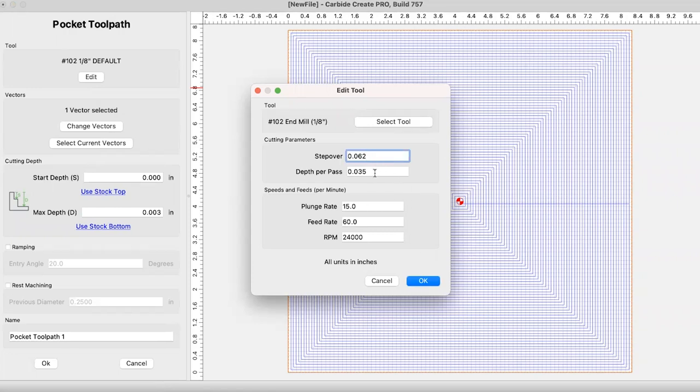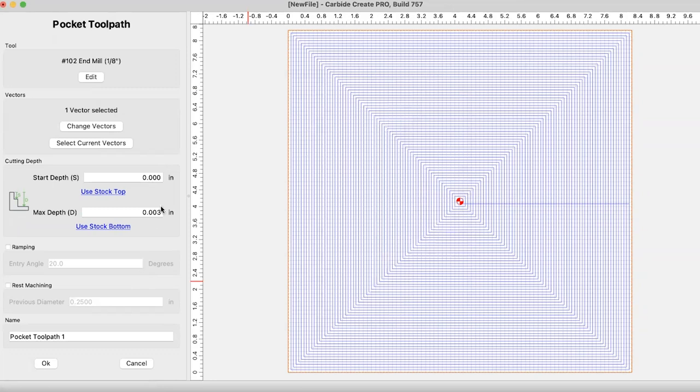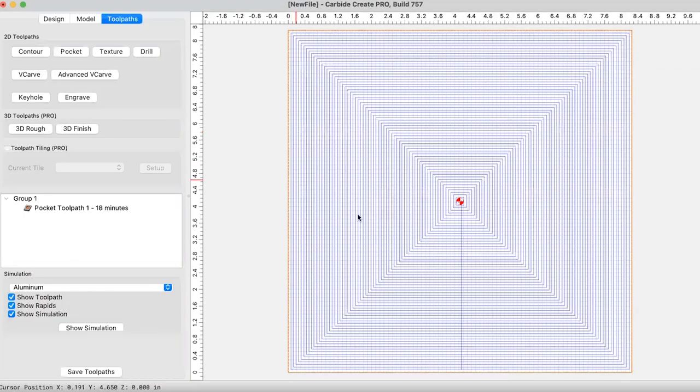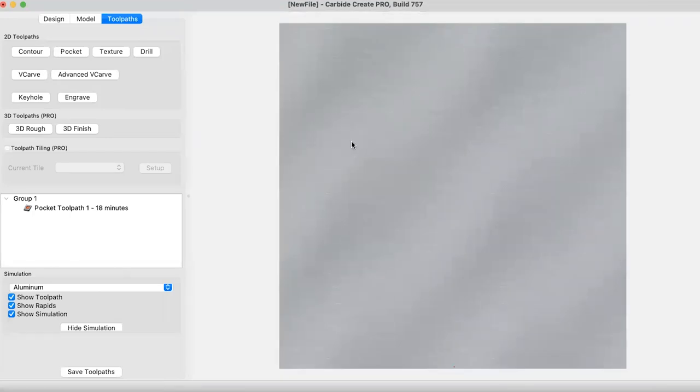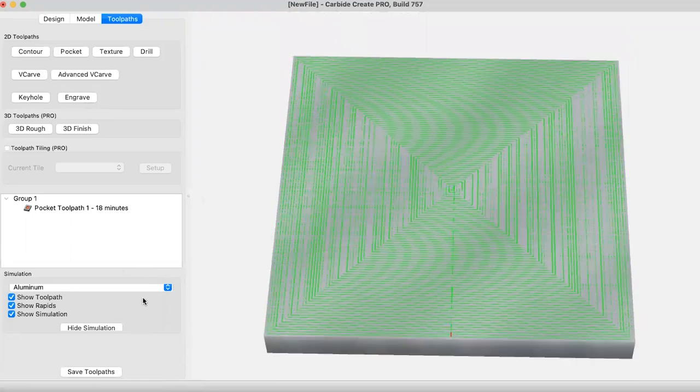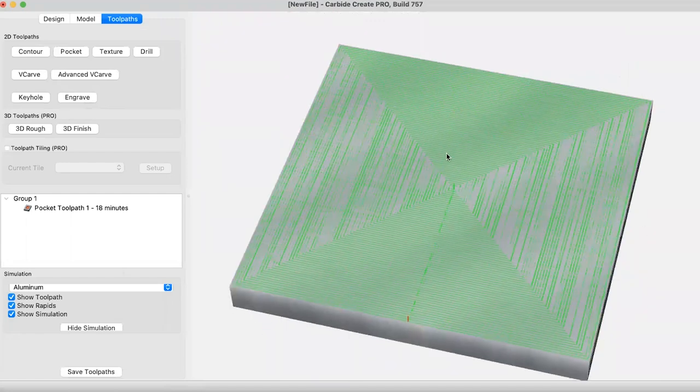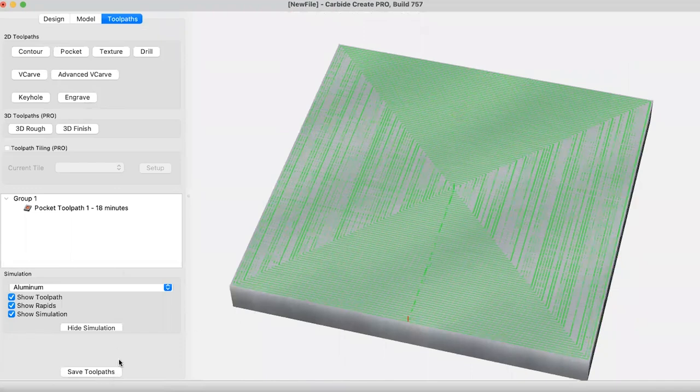The nice thing about this is that if let's say we level it out and it doesn't level the whole thing, we could set the zero again and level it again. So you have this file where if you accidentally cut something, you could run this again and you're not taking an eighth of an inch or a quarter inch off of your wasteboard. So I'm going to go ahead and we're going to do Nomad 3 hardwood and select that 102 again.